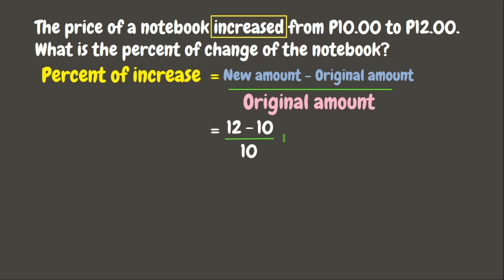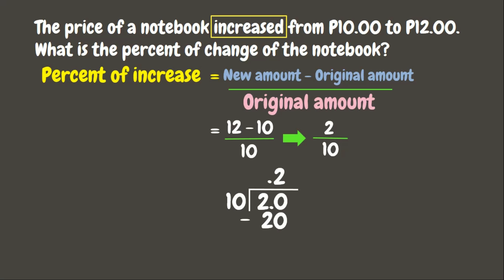Twelve minus ten is two, divided by ten. Now let us divide two by ten. Since two is smaller than ten, let's add point zero. Let's put the decimal point aligned from the decimal point in the dividend. Twenty divided by ten is two. Two times ten is twenty. Twenty minus twenty is zero. Our answer is point two.